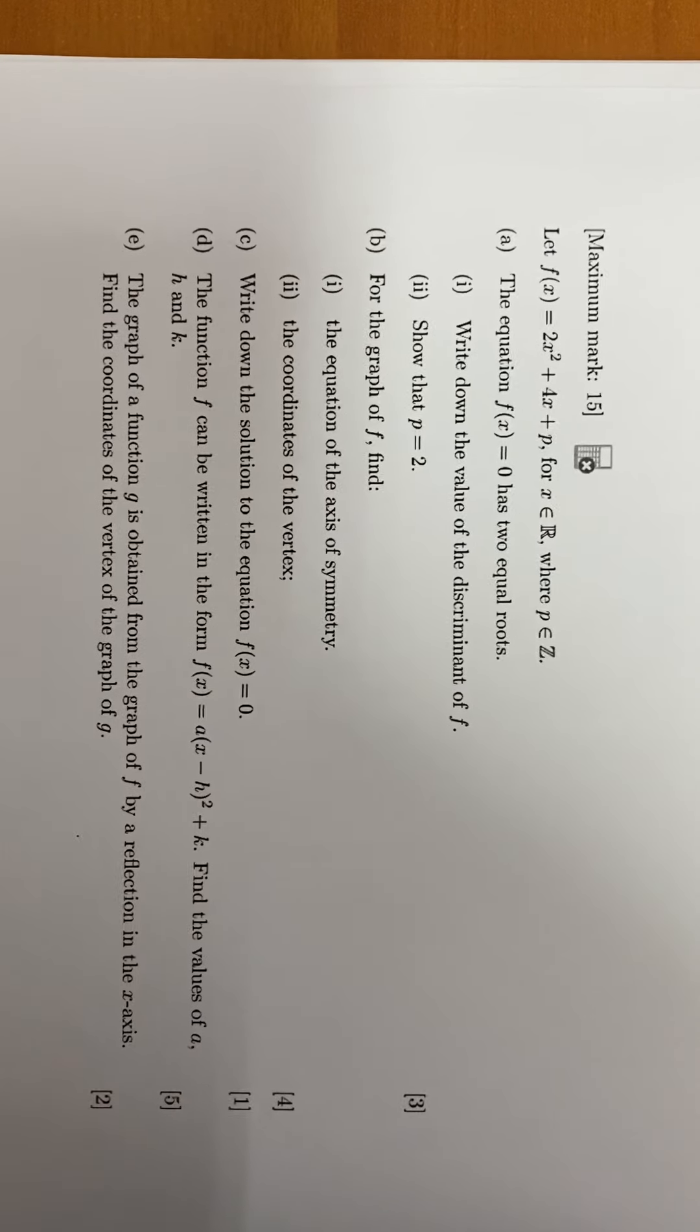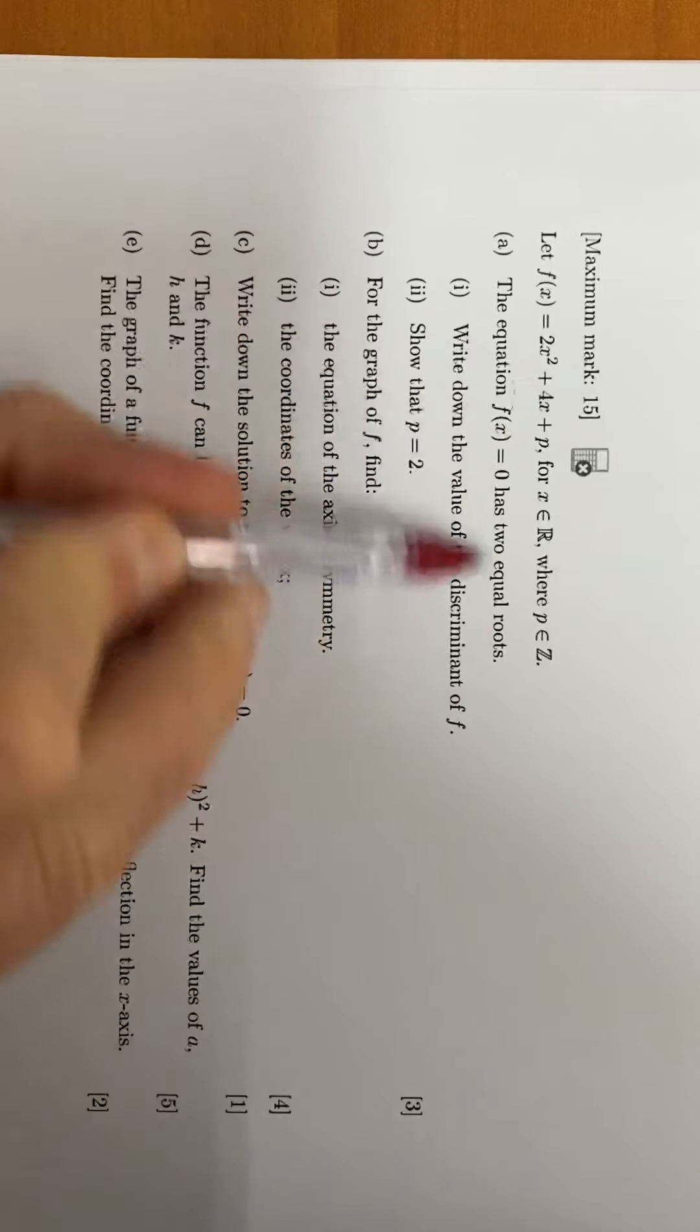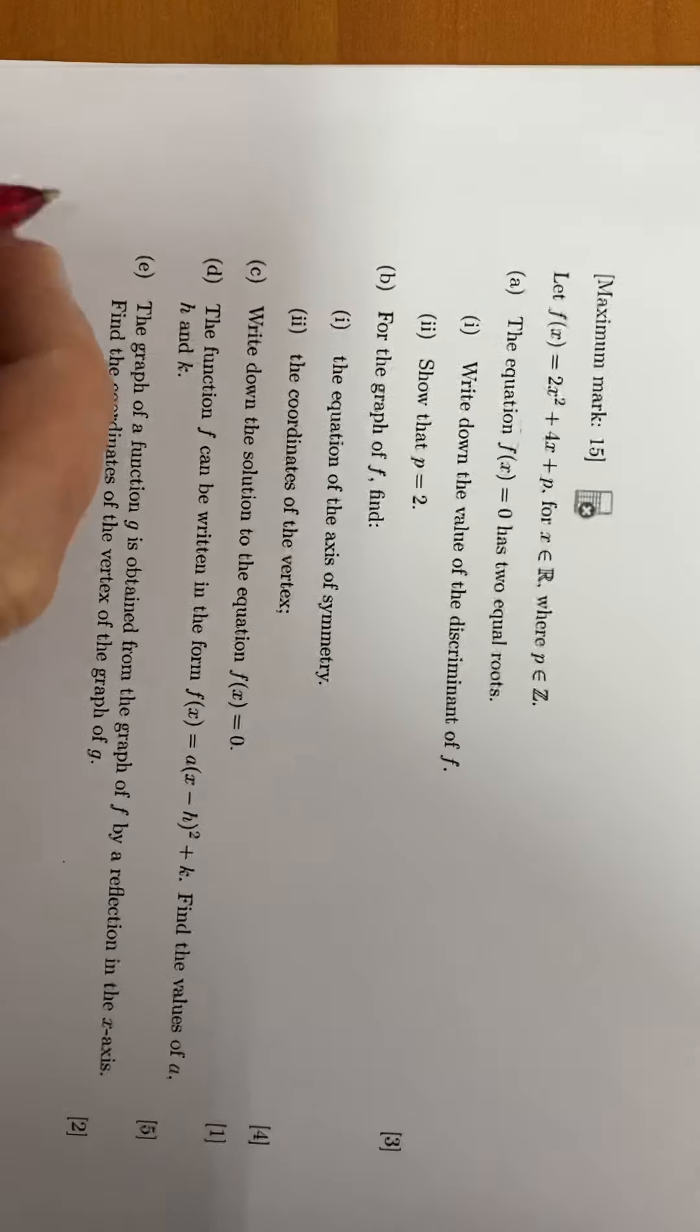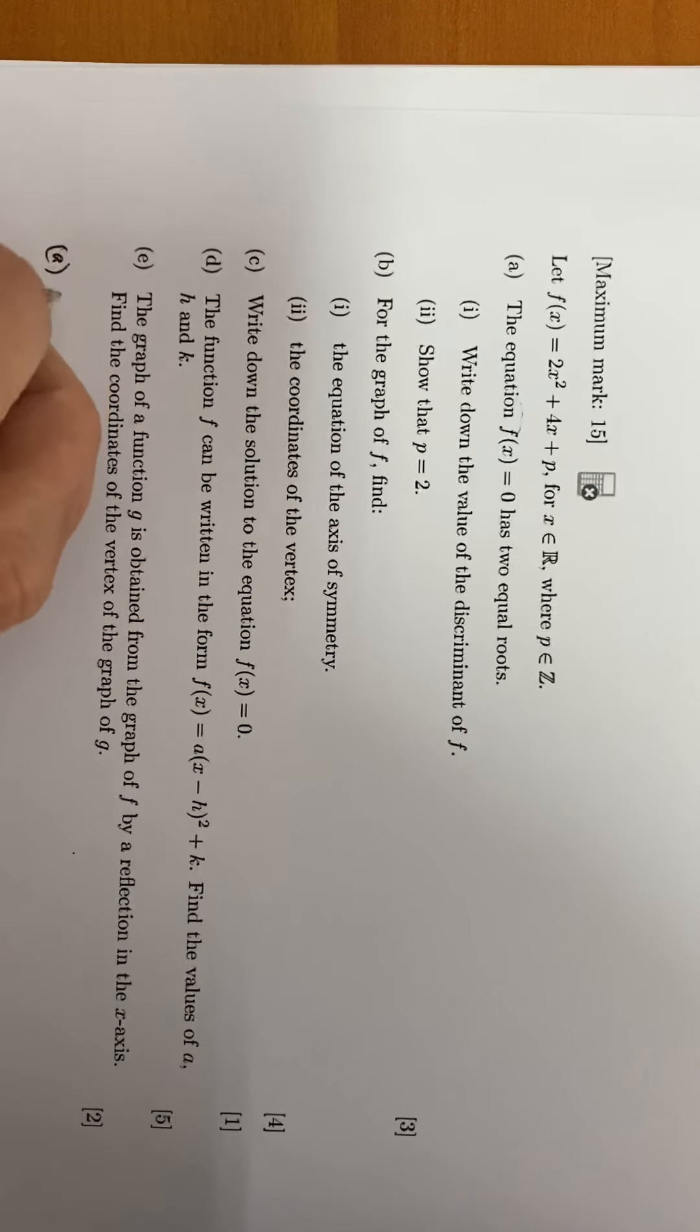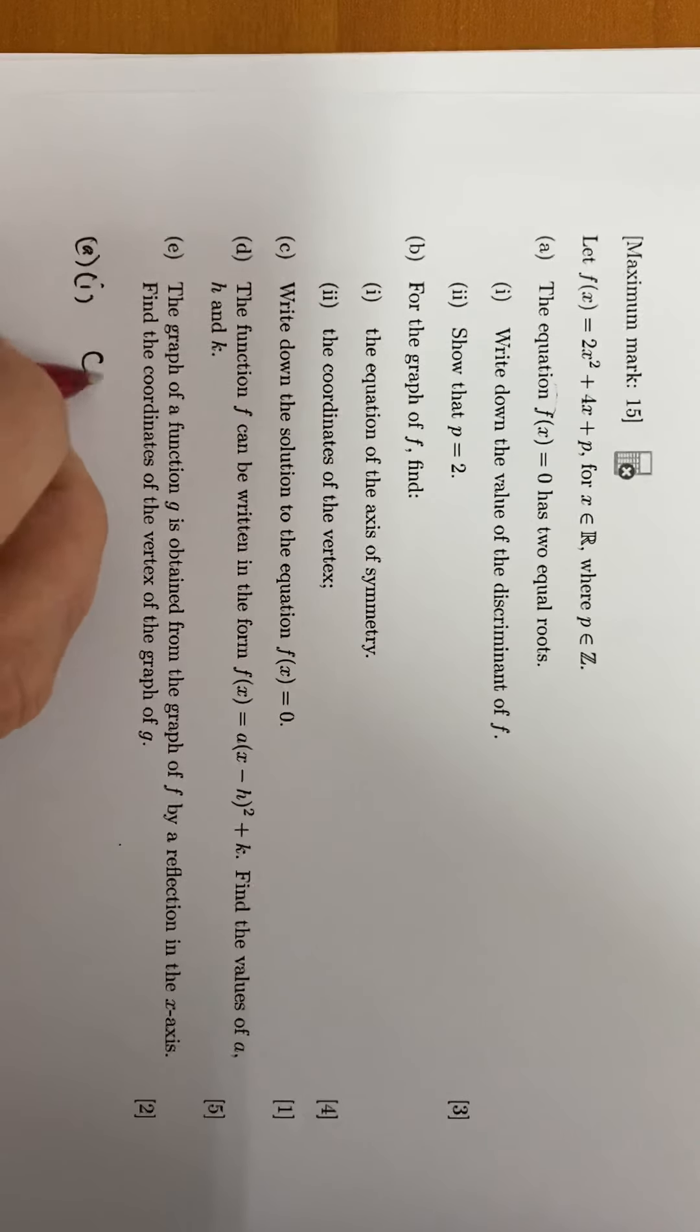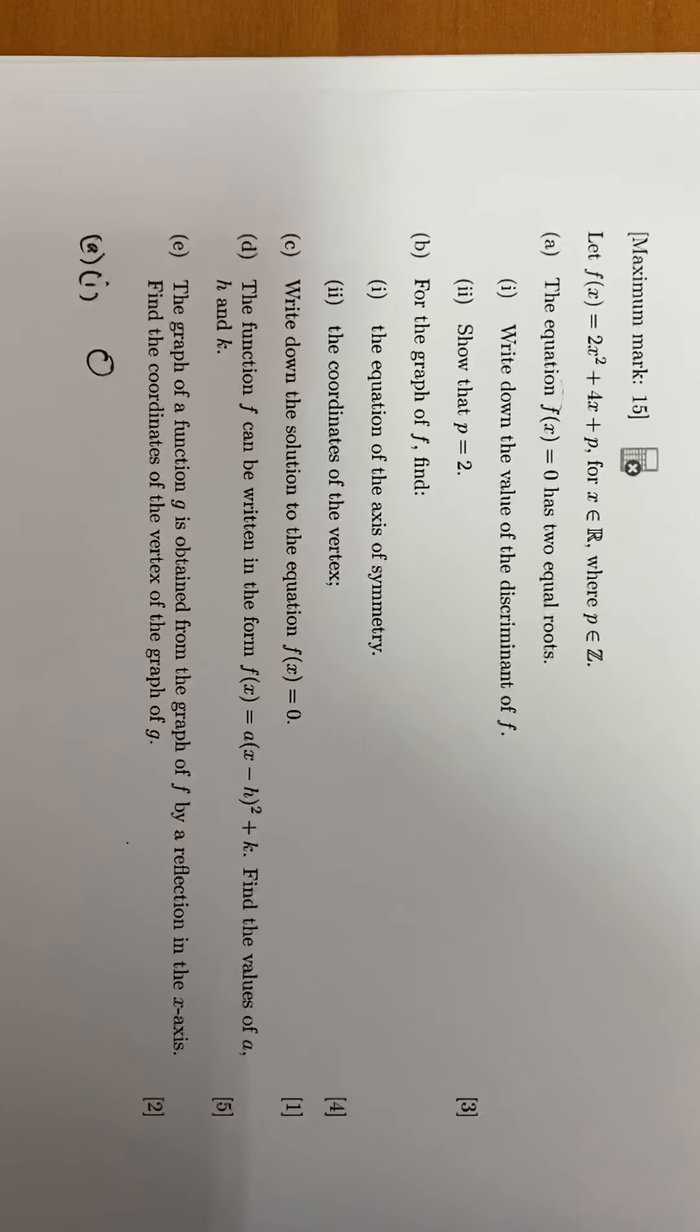Question 10, the last question. We have the equation f(x) equal to zero. Here's our function, a quadratic function. The equation has two equal roots, so write down the value of the discriminant. That's a straight one mark question. The value of the discriminant is zero if those roots are equal. Remember, if it's greater than zero, it has two real roots, and if it's less than zero, it has no real roots.